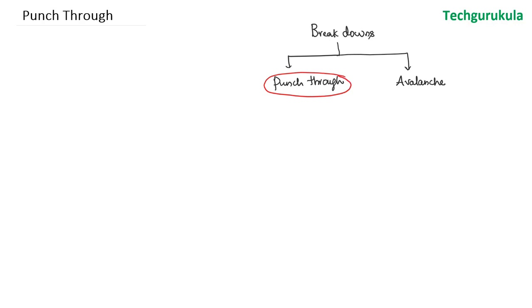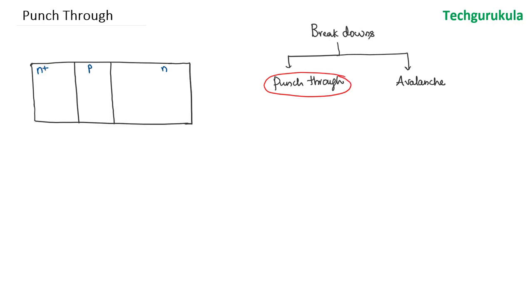Let me take the BJT structure here. This is the emitter junction and this is the collector junction. In the active region of operation, the emitter junction is forward biased and the collector junction is reverse biased. Accordingly, I am showing here the depletion region widths. As the emitter junction is forward biased, the depletion width is smaller, and the collector junction depletion width is larger because it is reverse biased.